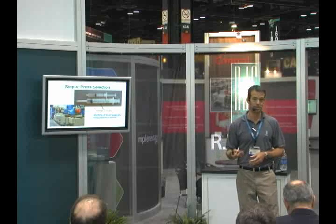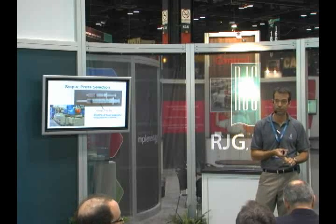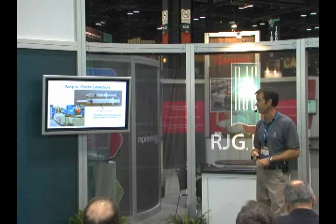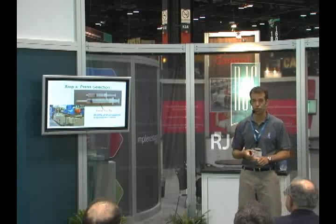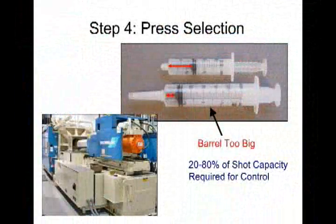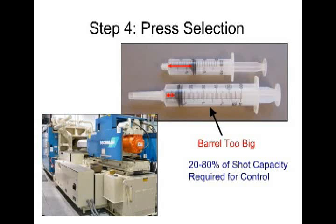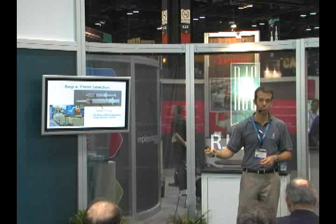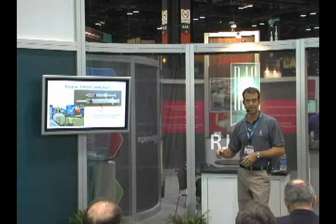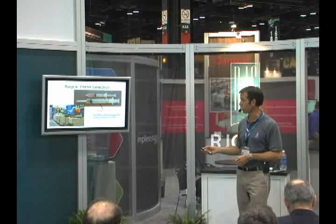One specific aspect of this is barrel size for the volume level of the part you're producing. The standard rule of thumb in the scientific molding world is to make sure you're utilizing between 20% and 80% of that shot capacity. If you've put a small mold in a larger machine because those are the resources you have available, and you're down into the 5% or 10% of barrel utilization, you're going to have a very difficult time establishing consistent and repeatable fill speeds from shot to shot. You don't want to be in that situation where you're underutilizing your barrel capacity.